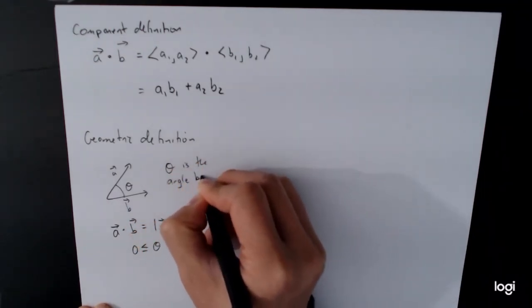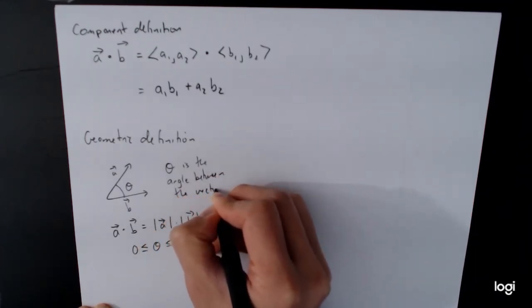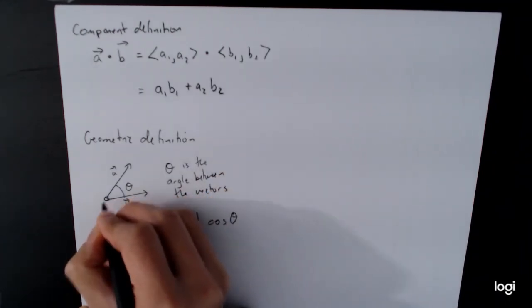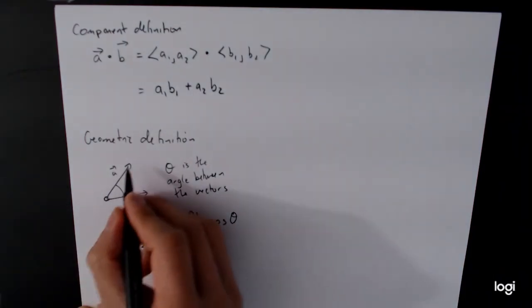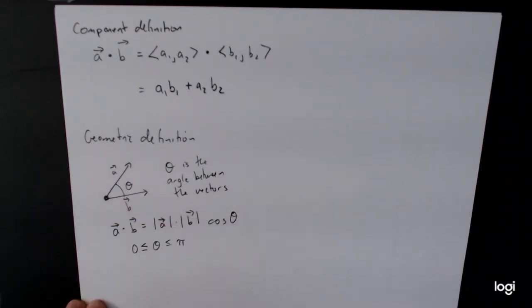Now it's important when we say the angle between the vectors, we are saying that we are looking at the angle when we draw the tails together. Because if we were to draw the tail attached to the head, we'll end up with different angles involved. So we really want to have the two tails together. That's very important when we talk about the geometric definition.